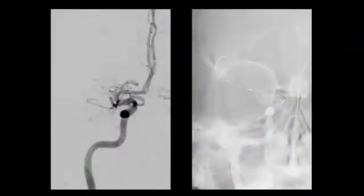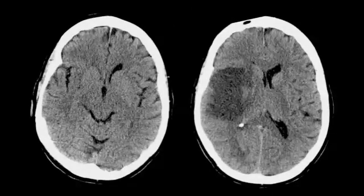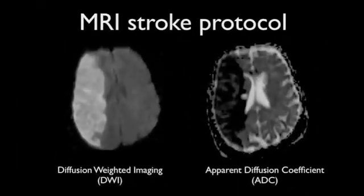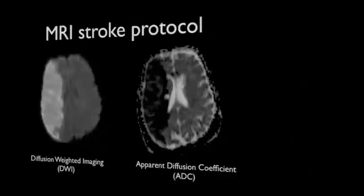A scan performed a few days later confirms evolution of the middle cerebral artery territory infarct. MRI is extremely sensitive to acute ischemia, with changes seen on diffusion-weighted imaging and apparent diffusion coefficient maps within a few minutes of onset, appearing as bright areas on diffusion and dark areas on ADC maps. MRI is usually not used in the very acute setting, as it imposes too great a delay in attempting to treat the patient either with intravenous thrombolysis or intra-arterial thrombolysis or mechanical thrombectomy.